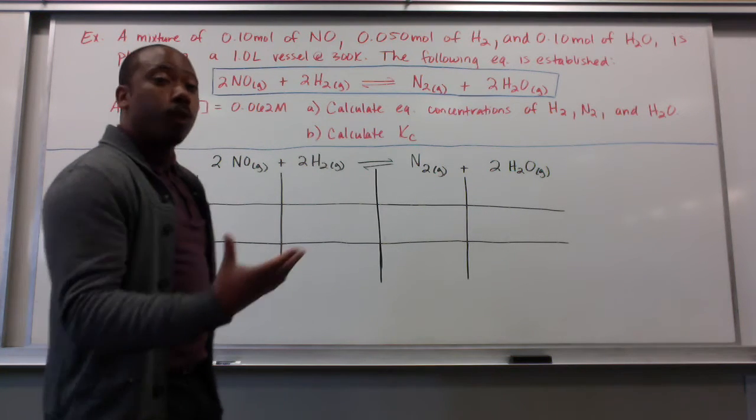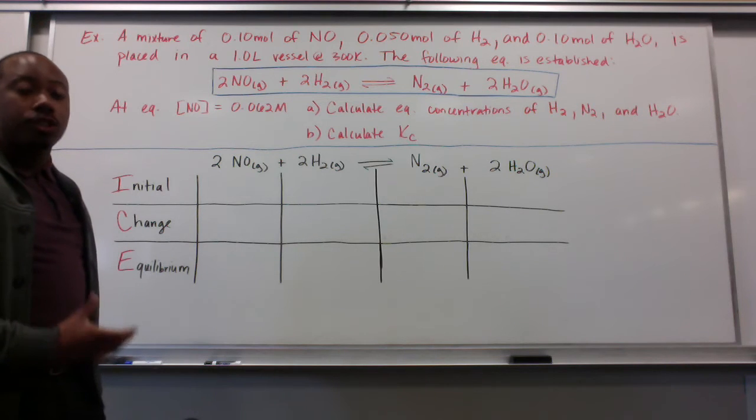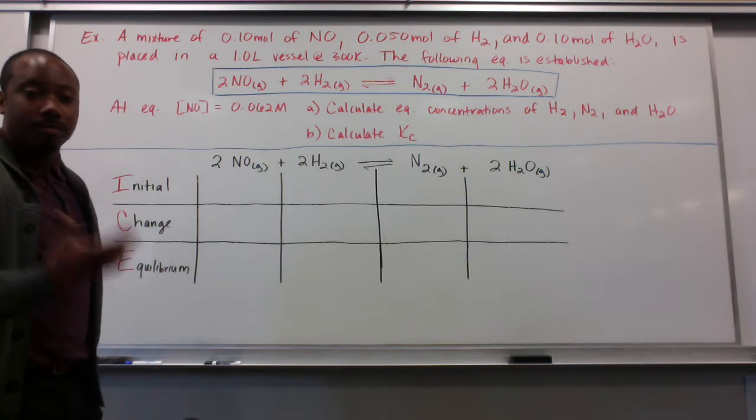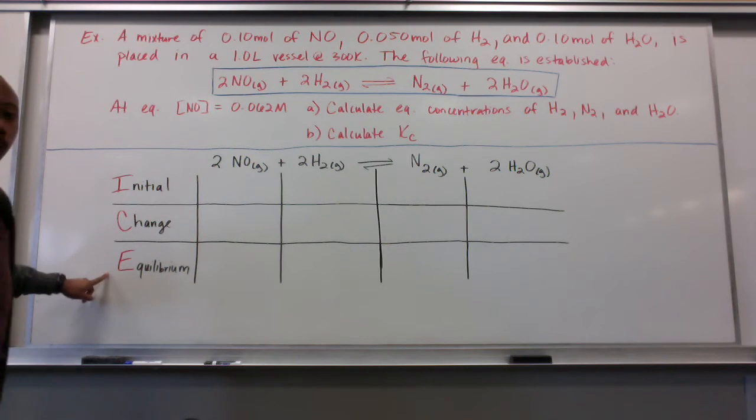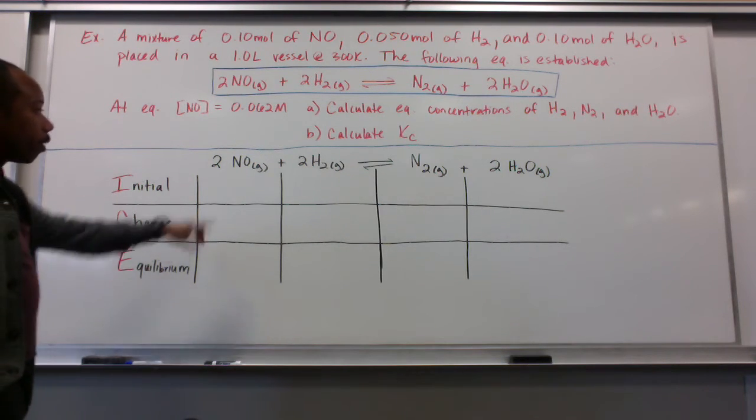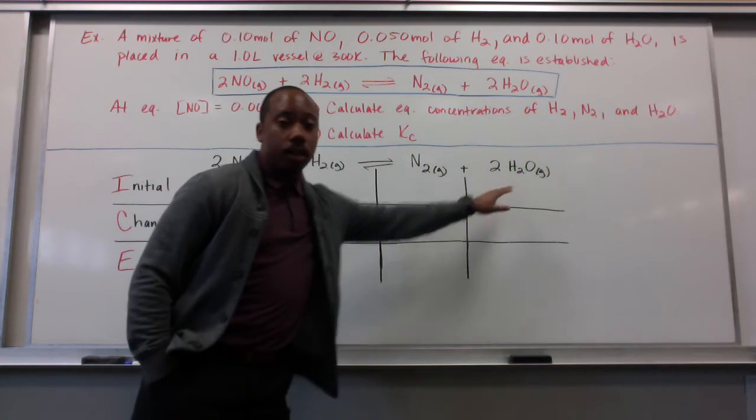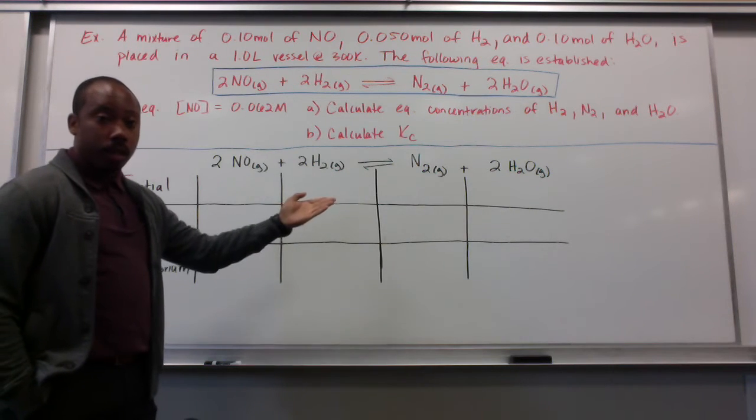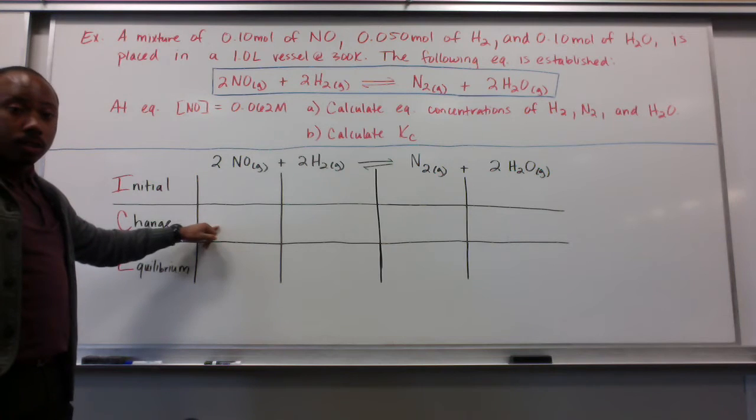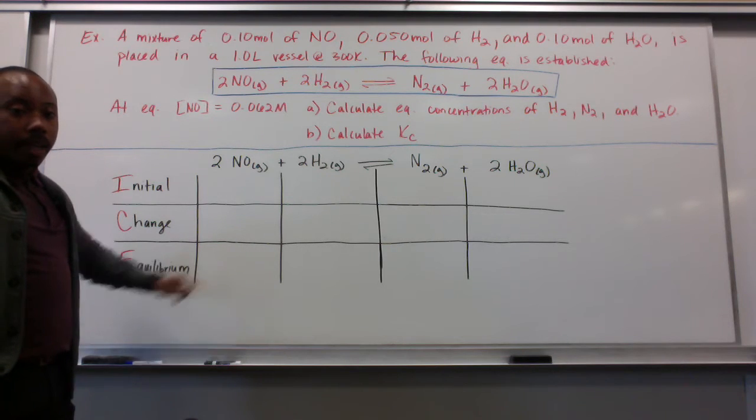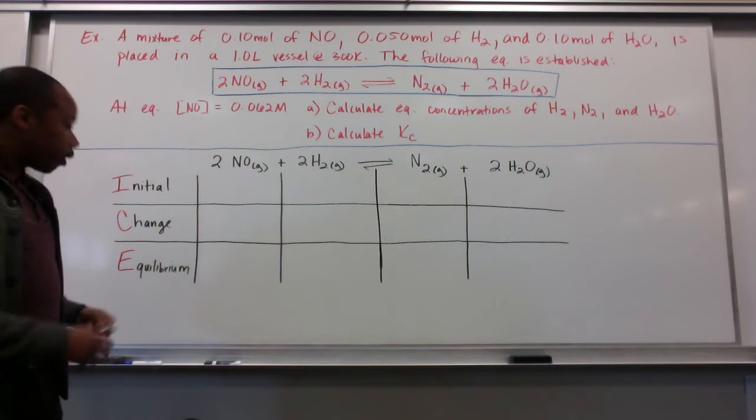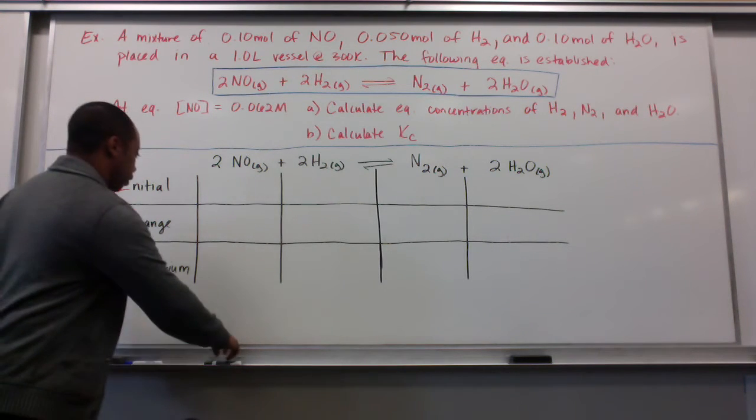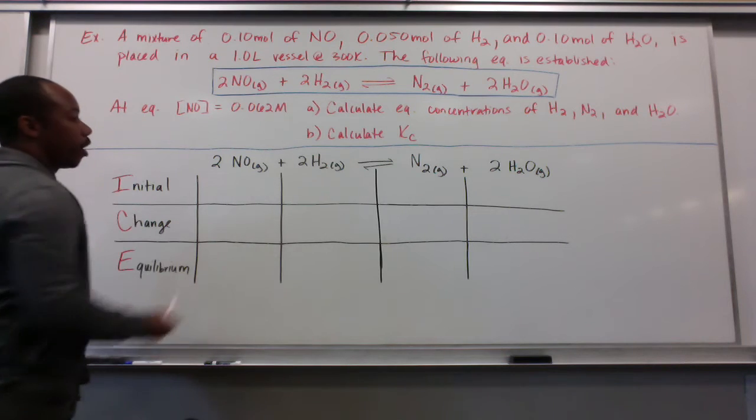Now, to answer this question, we must create something called an ICE chart. ICE stands for Initial Change and Equilibrium. We're going to observe how each of these substances are initially, and in what way they change, and how they end at equilibrium. First things first, we look at how they are initially.